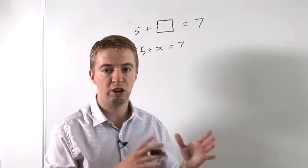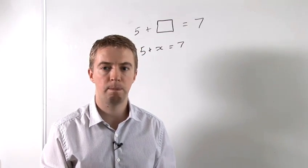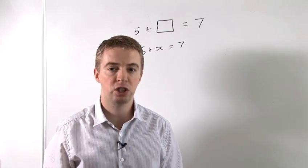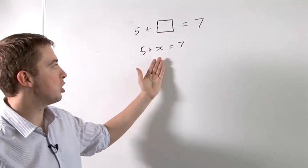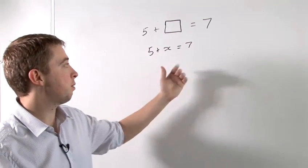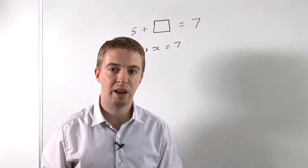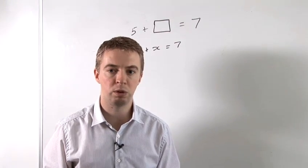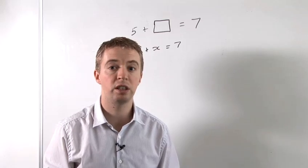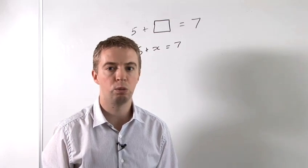The next thing to talk about is how to rearrange equations like this. Something that a lot of teachers say when you see an equation like this is take five to the other side. Now, that really doesn't explain what we're doing and it doesn't help children to understand why you're doing what you're doing.